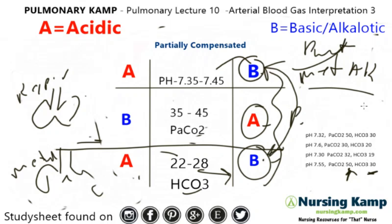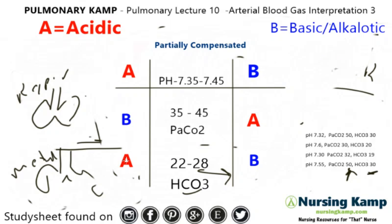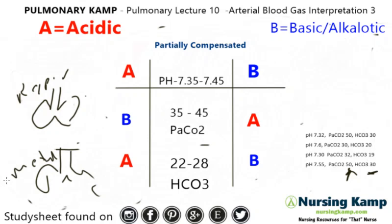That's about it. Partially compensated is an advanced interpretation of an ABG. The next one we're going to do is the last step, which is a compensated blood gas. We've covered uncompensated, partially compensated, and regular basic interpretation. The next one — the most advanced — is called compensated blood gas. We'll see you next time.